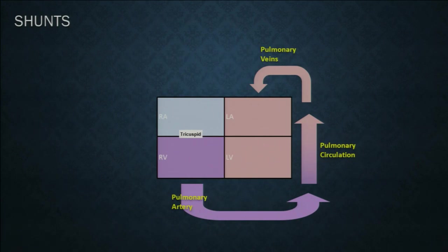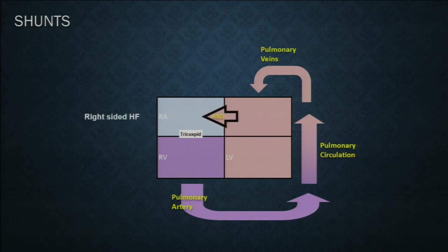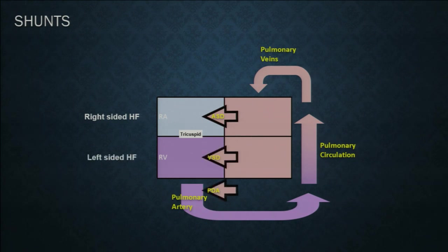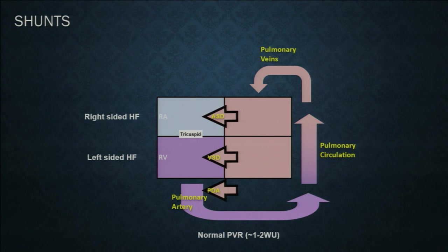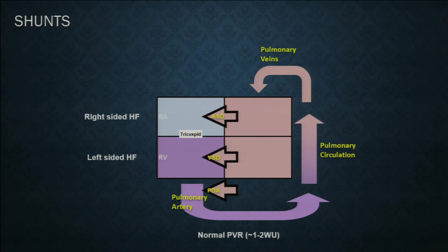Shunts are very common and are often diagnosed later in life. Pre-tricuspid shunts, such as atrial septal defects, predispose the patient to right-sided heart failure. Post-tricuspid shunts — VSDs and PDAs — predispose to left-sided heart failure when pulmonary vascular resistance is normal. However, patients with Eisenmenger syndrome or elevated pulmonary vascular resistance develop right-sided heart failure and would not undergo closure, as it would worsen their pulmonary hypertension.